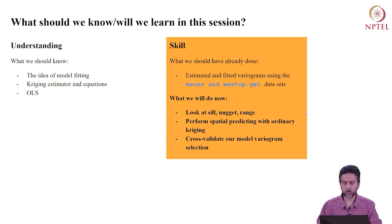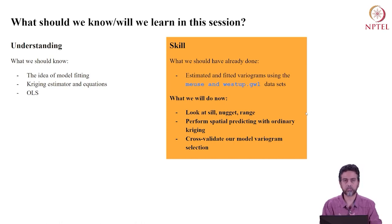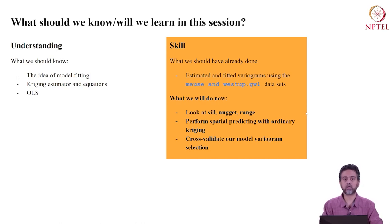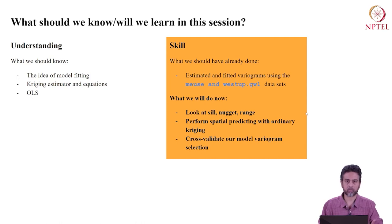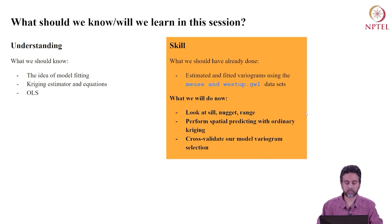What will we do today? We will look at the parameters of our fitted variogram — the main parameters that tell us the shape, called sill, nugget and range. Then we will use our fitted variogram to perform spatial prediction with ordinary Kriging, predicting groundwater levels at locations where we have no data. And then we will cross-validate our model variogram selection, quantifying agreement between predicted and observed values. If that's clear, let's move ahead.